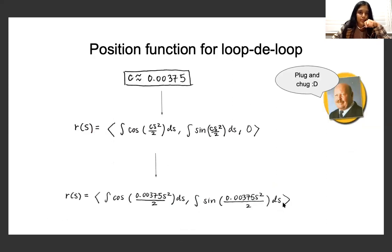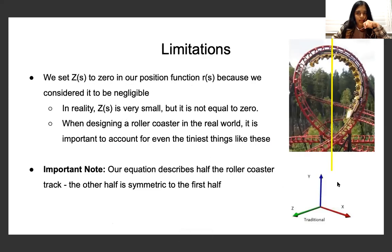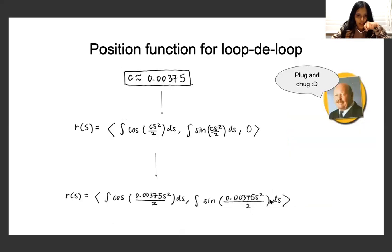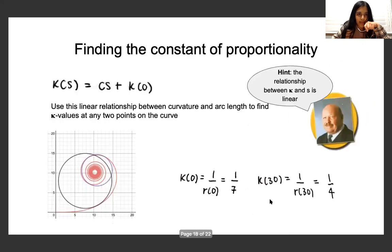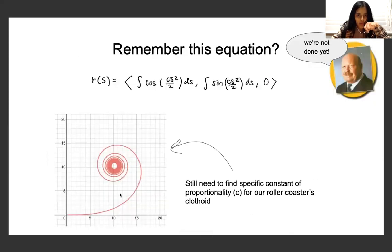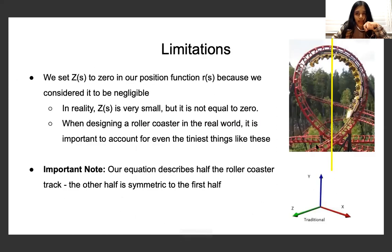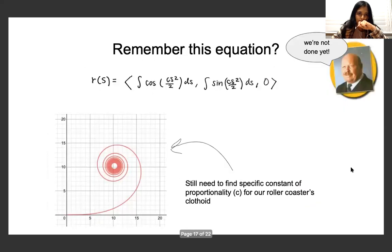So now all we have to do is plug and chug. We can plug in C into our r(S) position function. And we end up with a complete position function for our curve. So this position function results in a loop-de-loop, which is defined by this clothoid function. Today's loop-de-loops are all functions of curvature and they're all modeled on clothoids.